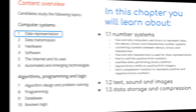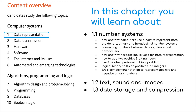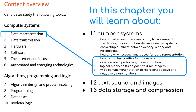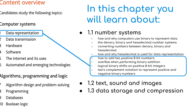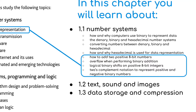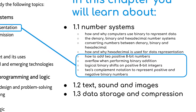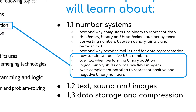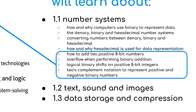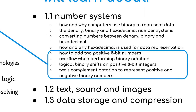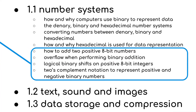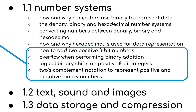Welcome back everybody. We're going to be looking at the third and final part of 1.1 number systems following the new computer science IGCSE syllabus. In this we're going to be looking at how to add two positive 8-bit numbers, overflow and how this is caused, logical shifts on positive binary numbers, and how we can multiply and divide binary numbers using this method. We'll finish off with two's complement notation, which is new to the syllabus and allows us to represent both positive and negative binary numbers. After that, we'll be moving on to text, sound, and images.